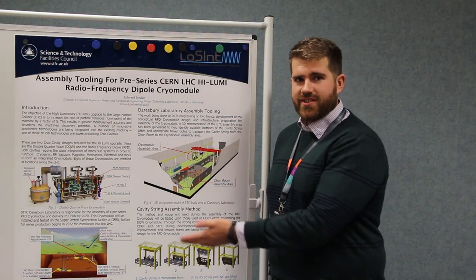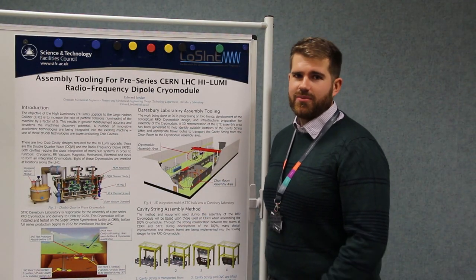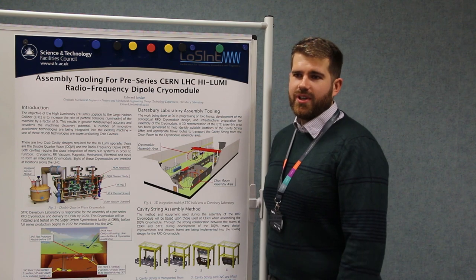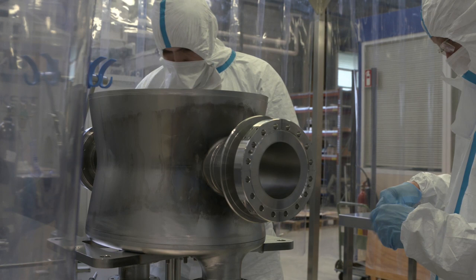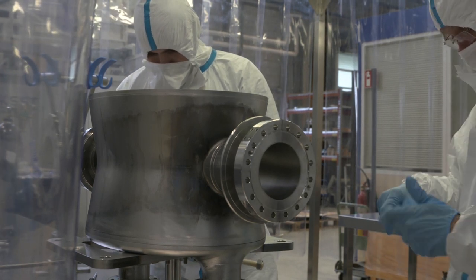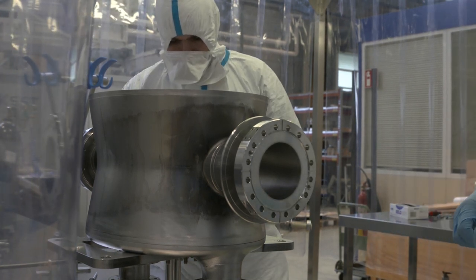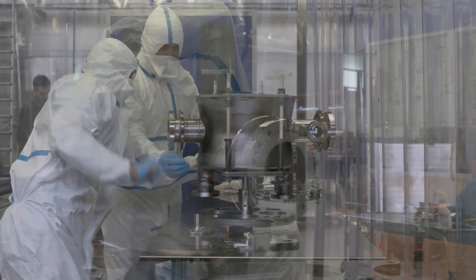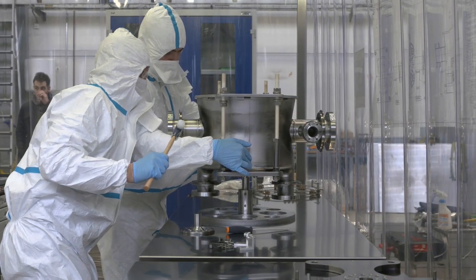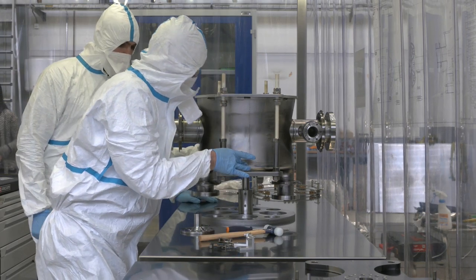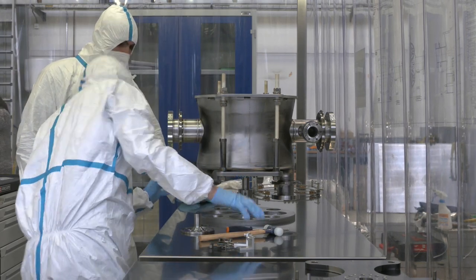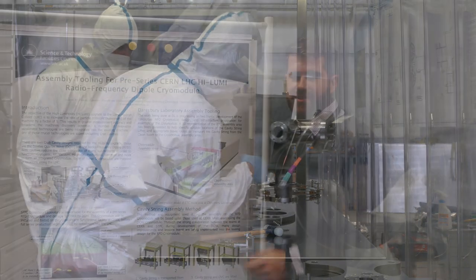So once the dressed cavities that Tom described earlier arrived from CERN, we need to assemble them, put them together in a clean environment. This is because if the cavities have any kind of dirt on it or imperfections, then when you put all this power into it, there will be a short circuit and the cavities won't function as intended. So it's a very delicate process and will be done in an ISO4 clean room, which is quite a high standard of cleanliness.